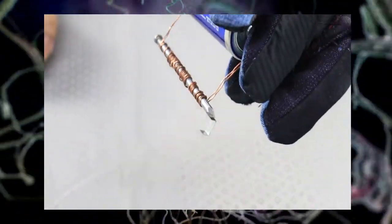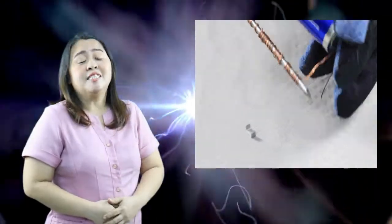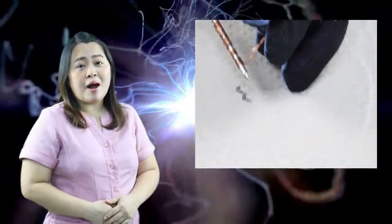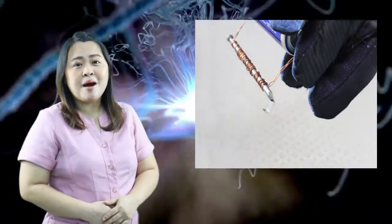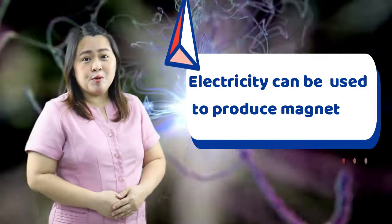And try to attract the staple wire using electromagnet. Inside the rivet, the staple wire attracted to the electromagnet. Therefore, electricity can be used to produce magnet.